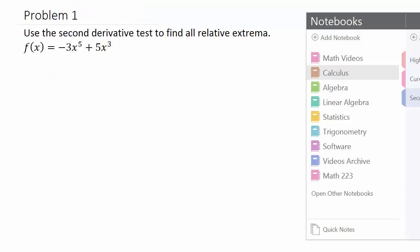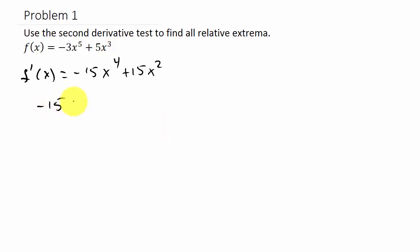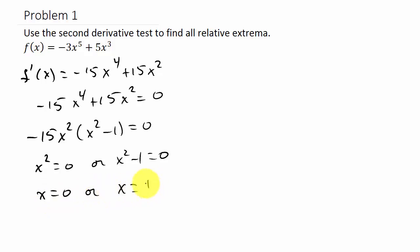Alright, so let's look at our problem. Use the second derivative test to find all relative extrema. The first thing we're going to do is find the first derivative, so that's negative 15x to the fourth plus 15x squared, set it equal to zero, and solve for x. I'm going to factor out a negative 15x squared, which leaves me with x squared minus one equals zero. So I've got x squared equals zero, or x squared minus one equals zero, giving me x is zero, or x is plus or minus one.